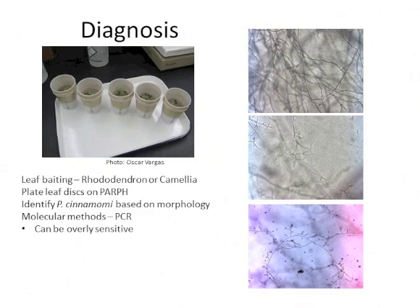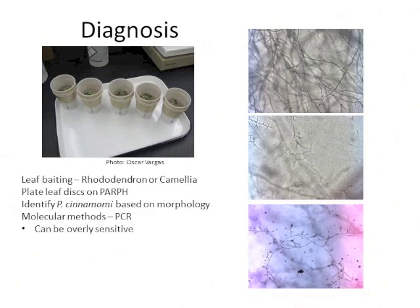The next step in the diagnosis process is to confirm presence of the pathogen. Luckily, Phytophthora cinnamomi is really easy to grow on artificial media. We can use PARF, which contains antibiotics to suppress other microbes. Phytophthora cinnamomi has very distinctive hyphae — very tightly branched and coralloid, non-septate. We also have molecular techniques for detecting it, but they can often be very sensitive and give a positive when you can't actually isolate from the sample, so culture is a more robust test.